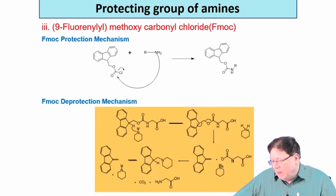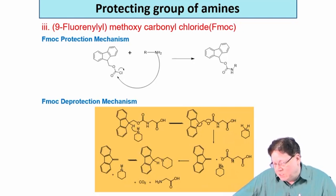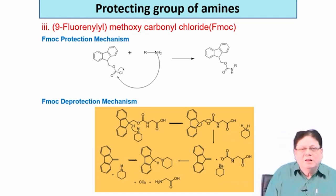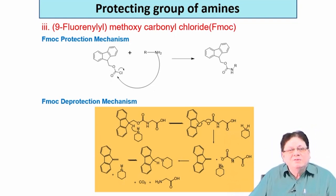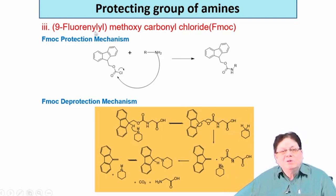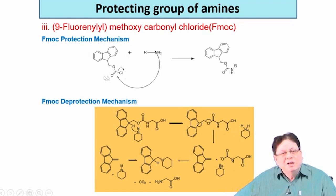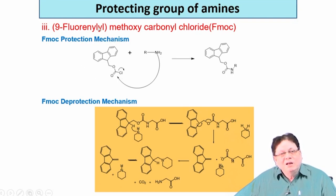Next comes another protecting group which is now routinely used in peptide synthesis: that is called the FMOC group. FMOC is 9-fluorenylmethoxycarbonyl chloride. FMOC protection is very similar; this is commercially available. This is 9-fluorenyl chloroformate - like the earlier benzyl chloroformate, so it is a chloroformate again - and RNH2 attacks this.